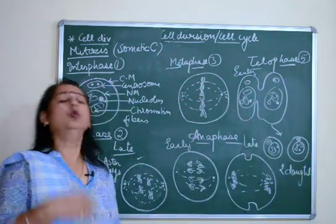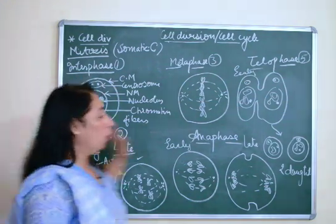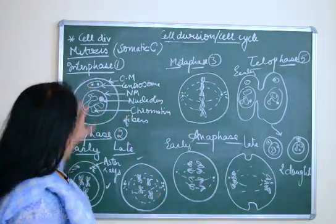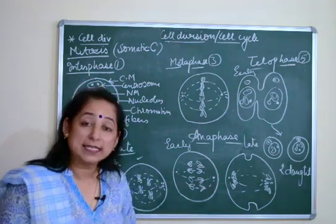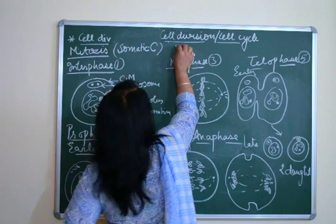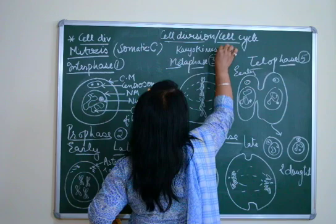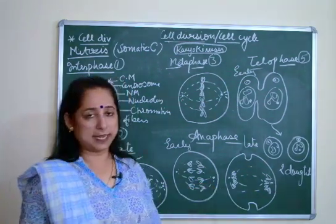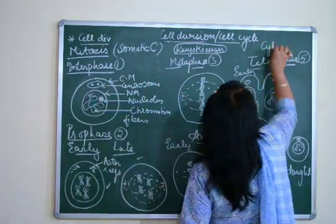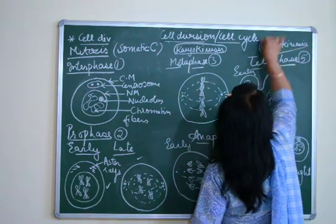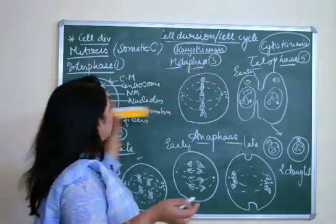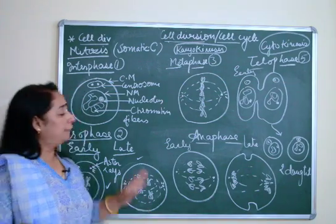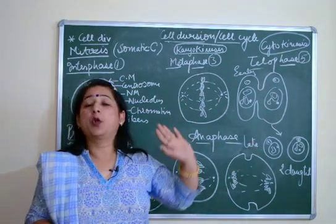Finally, two daughter cells are formed after the division of one single cell. This is the whole process of cell division. From interphase through prophase, metaphase, and anaphase — karyokinesis, which is division of the nucleus, takes place. In telophase, cytokinesis occurs — the division of cytoplasm and cell membrane. Karyo means nucleus; cyto means cytoplasm. The complete division of the cell takes place, forming two new daughter cells.